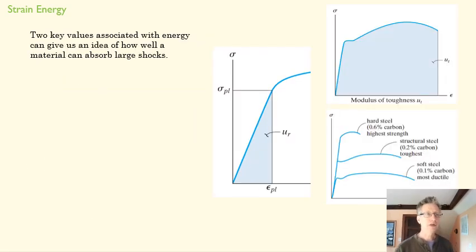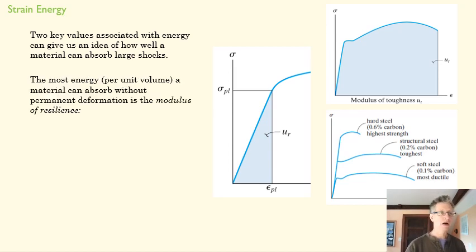Now, two key values we associate with energy can give us an idea of how well a material can absorb energy, absorb a large shock. One of those is the modulus of resilience, which is defined by the area under the triangle at the limits of proportionality. So this is sigma at the proportional limit. This is strain at the proportional limit. And it's this blue shaded area. That tells us how much energy a material can absorb before it is deformed.